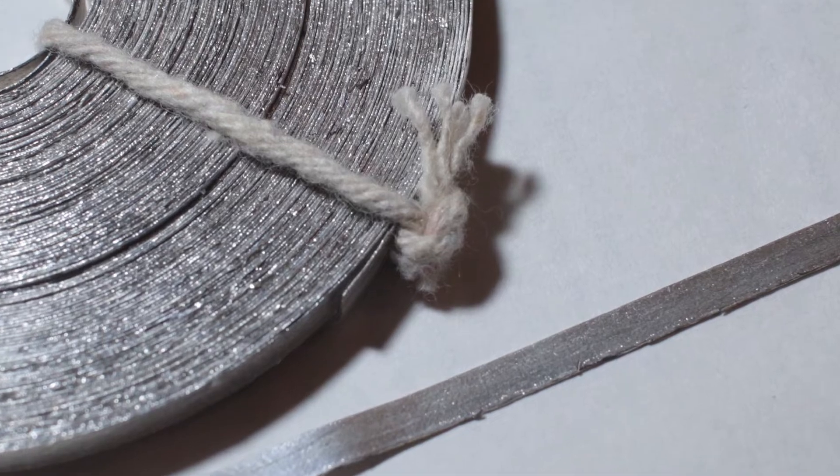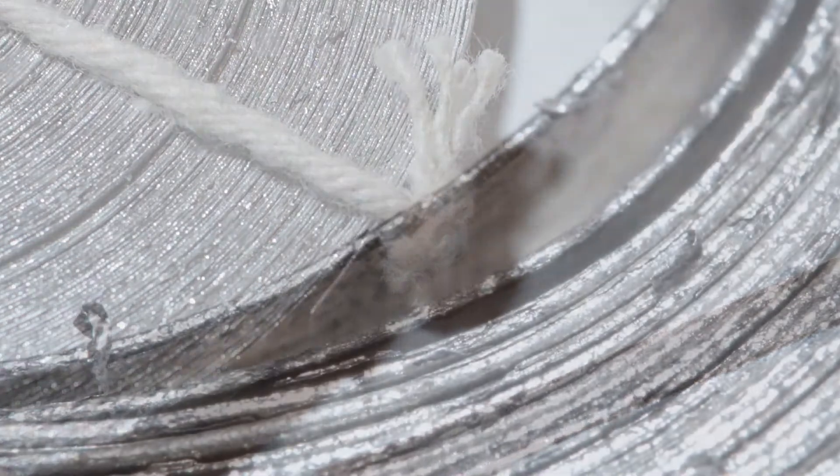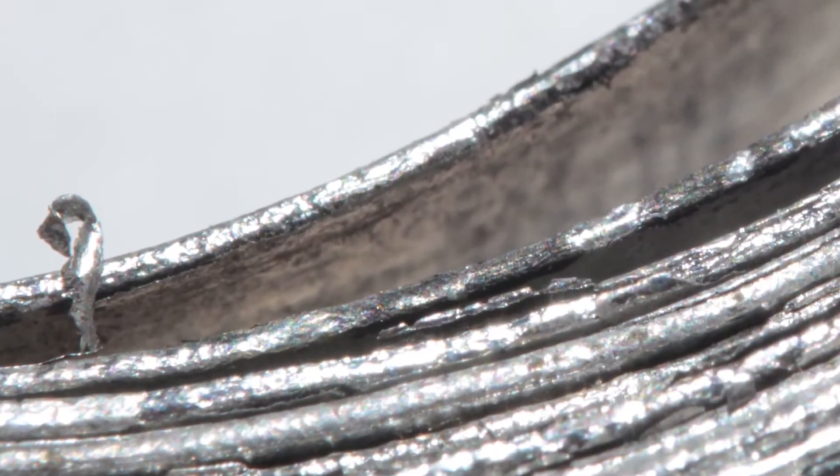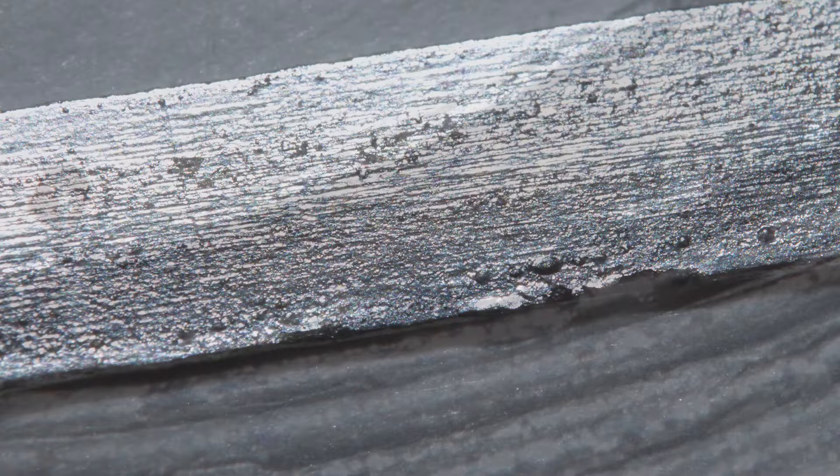Magnesium metal is gray and shiny, as you would expect. Here is magnesium ribbon and here is magnesium strip.